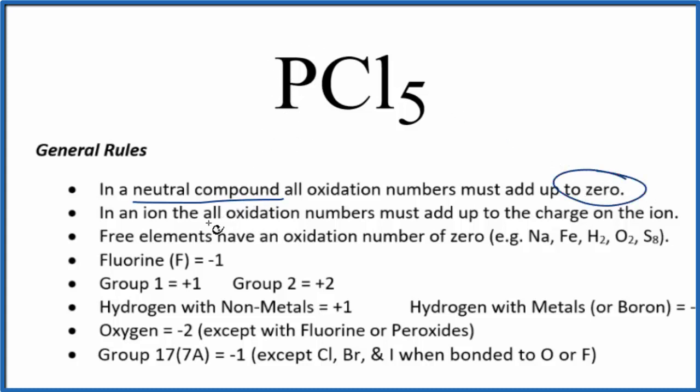As we look down our list, we don't see phosphorus, but we do see Group 17, sometimes called 7A. Chlorine is in Group 17, the halogens, and it will be negative 1, with a few exceptions.